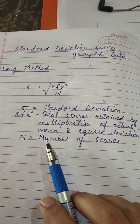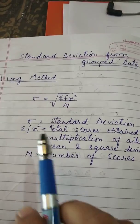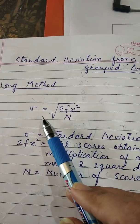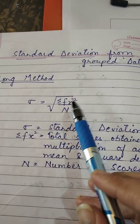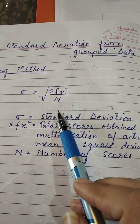Today I will discuss in this particular video long method, then further we will discuss short method. So long method ke liye the formula is SD is equal to square root sigma fx square upon n.